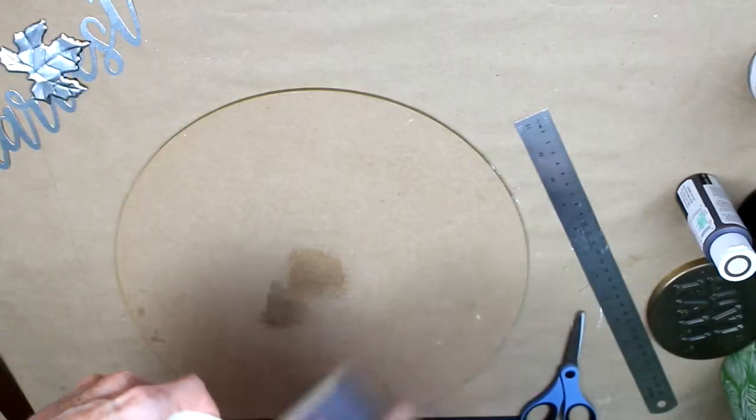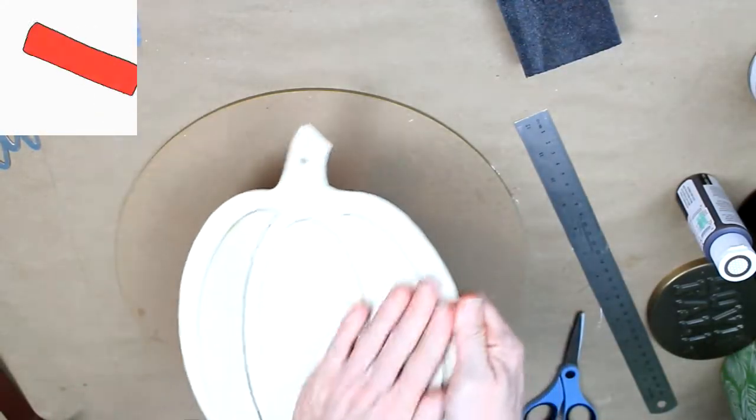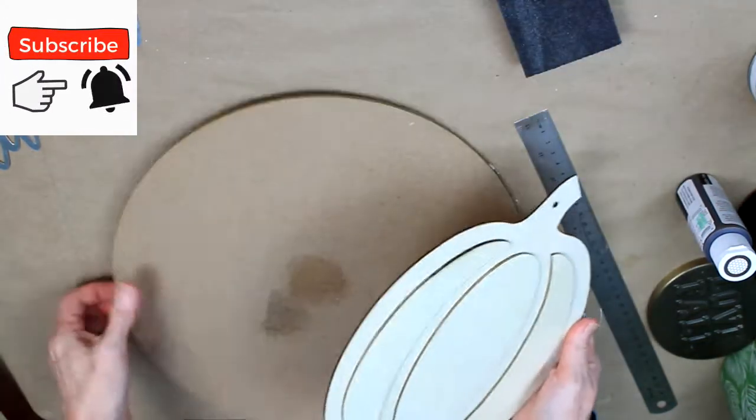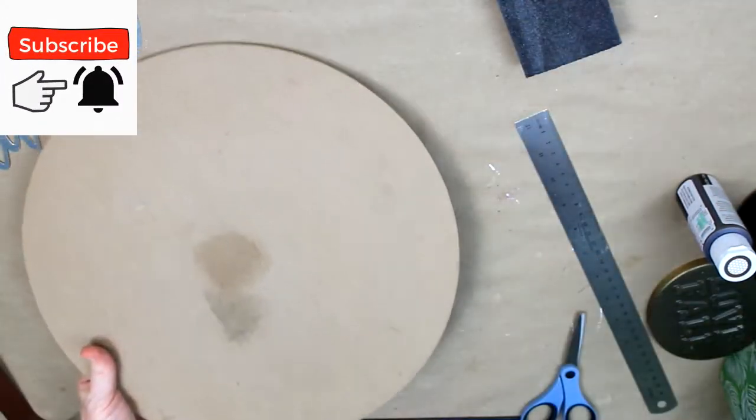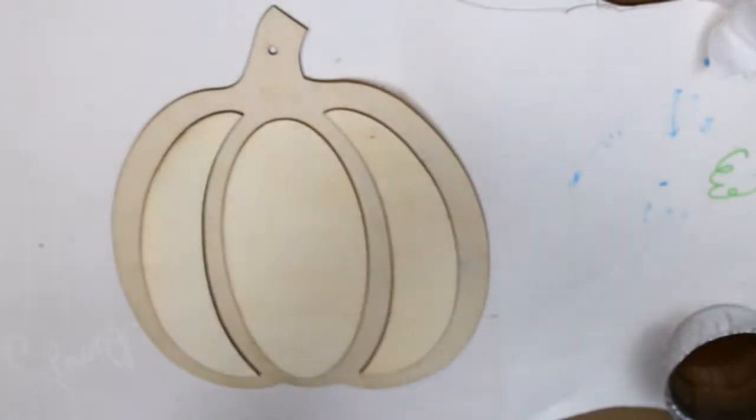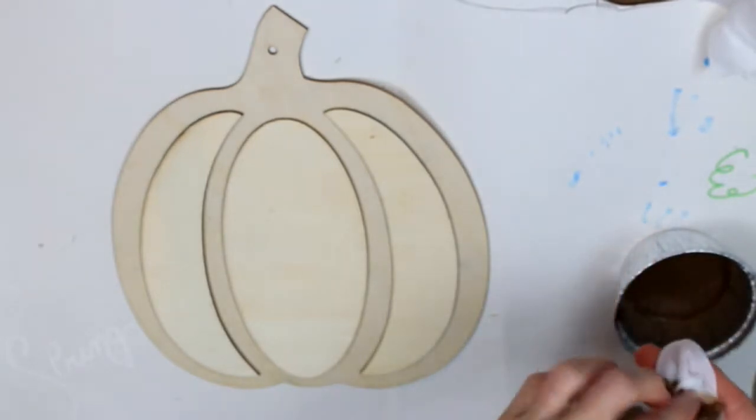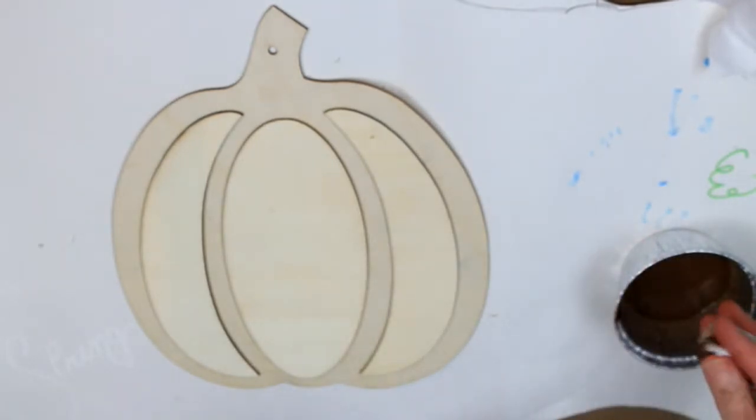I'm just taking my metal ruler to try to pick off that glue and then my sanding block, and those items also come from Dollar Tree. This is a thrifted sign. There's a Christmas sign on the other side and we're going to use the blank back side as our front.